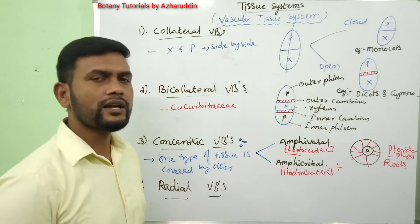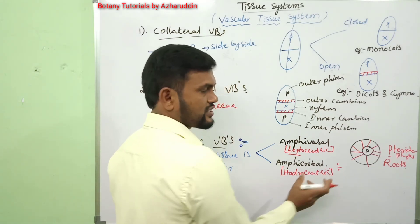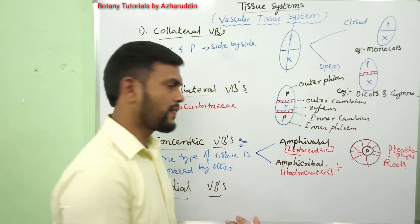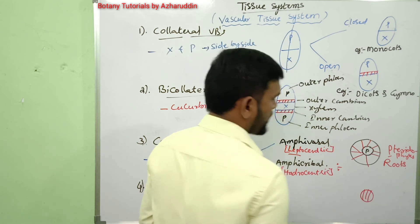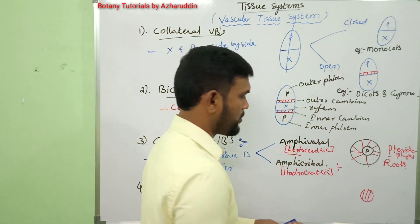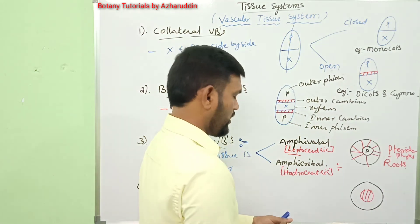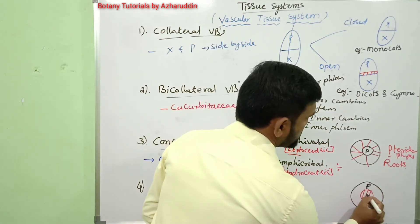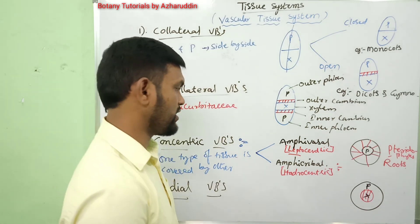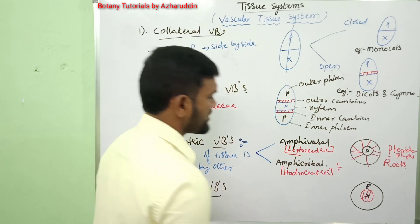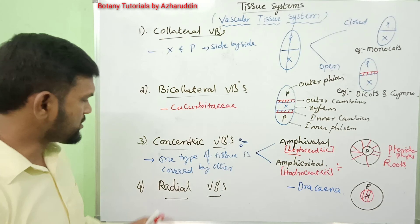In amphicribal vascular bundles, also called hydrocentric vascular bundles, xylem is present at the center and is surrounded by phloem. Such a vascular bundle is called amphicribal or hydrocentric vascular bundle, and it is seen in Dracaena.